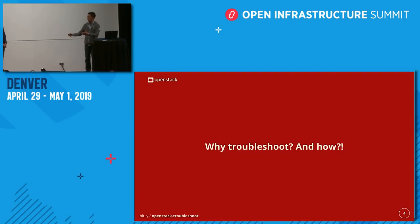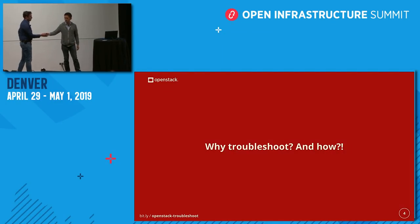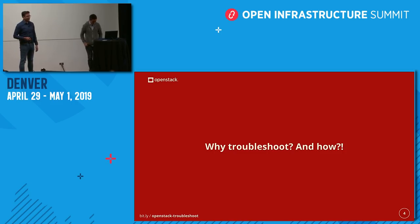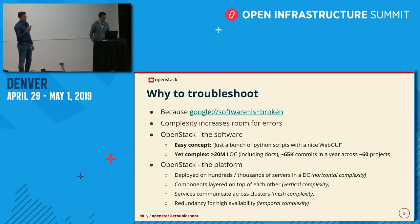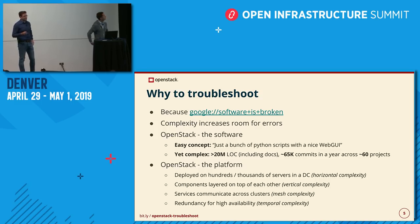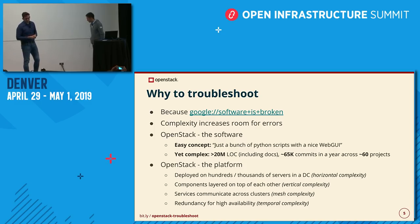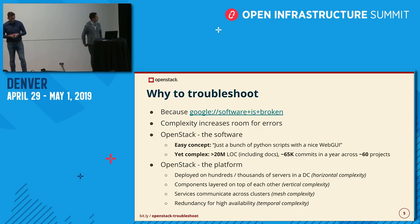The question arises: OpenStack is a very old project — why do we need a troubleshooting guide? Because software is broken unfortunately. The complexity in the OpenStack world increases the room for errors. It's a globally distributed project with more than 20 million lines of code — probably more than 30 or 40 million right now. Just last year it had 65,000 commits.